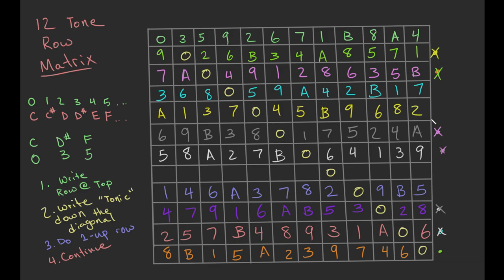B to zero: one, three, seven, four, five, B, nine, six, eight, two. Now at this point you can look up and down and see what's missing instead of using the plus-one method — either way works. It's like Sudoku: you should only have one of each number per row and per column.